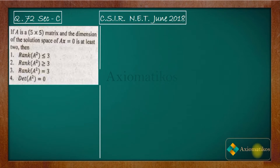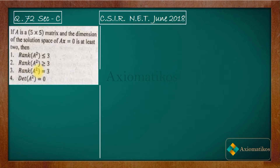Hello dear students, welcome to Axiomatic. This video is part of the solution series for CSIR NET June 2018, and we are doing problem 72 of Section C — a problem of linear algebra. If A is a 5×5 matrix and the dimension of the solution space of Ax=0 is at least 2, then: rank(A²) ≤ 3, rank(A²) ≥ 3, rank(A²) = 3, or determinant of A² = 0. These are the options.